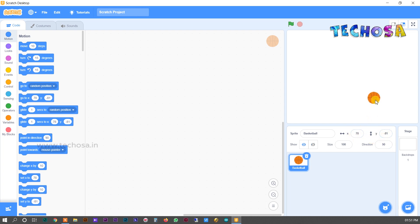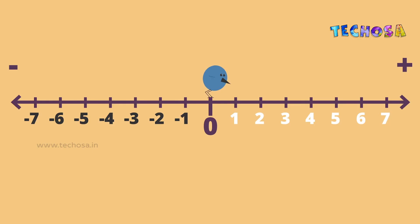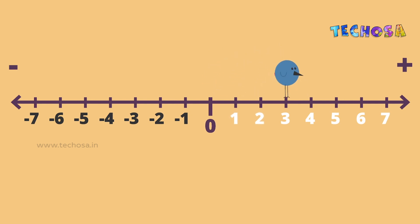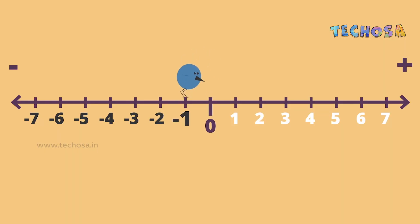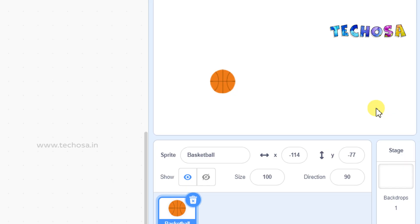Do you know what minus means? What does minus 50 or minus 30 mean? These are negative numbers. When we count numbers normally we go 1, 2, 3, etc. When we count in reverse it goes 3, 2, 1, and 0. We learned there is no number before 0, but actually there are — they are minus 1, minus 2, minus 3, etc. These are called negative numbers.